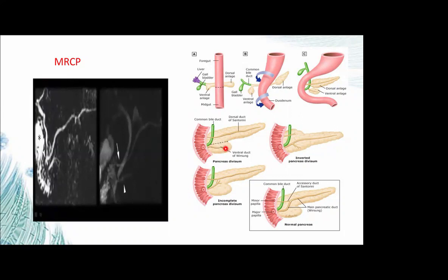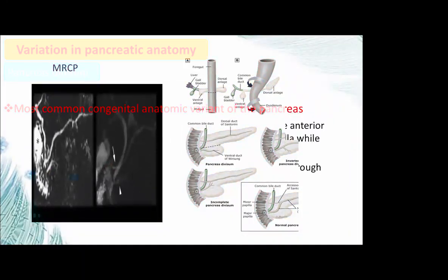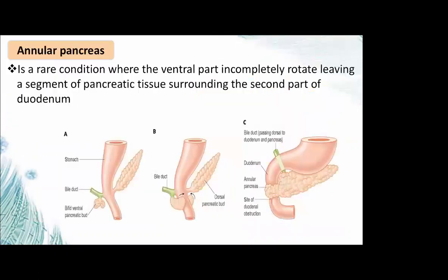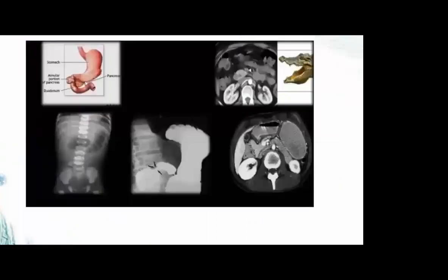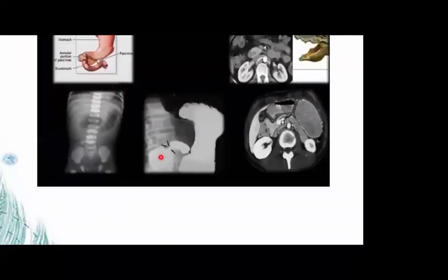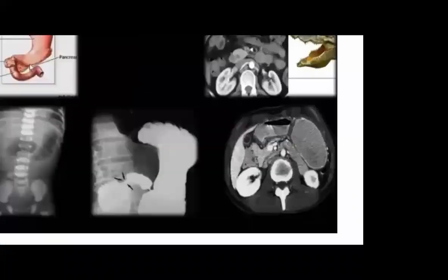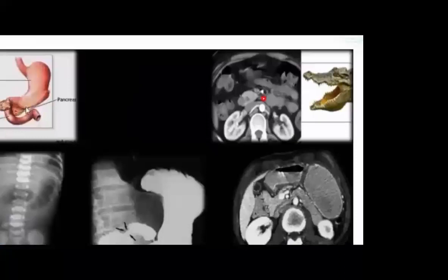The anterior inferior part of the head then drains into the major papilla. This is known as pancreas divisum. On MRCP, a cross-sign is seen. With pancreas divisum, the dorsal duct crosses anterior to become the minor papilla duct. There are also conditions where the ventral pancreatic bud can completely encircle the second part of the duodenum — annular pancreas. On plain X-ray, it shows a double-bubble sign. On barium study, it constricts the second part of the duodenum. On CT, it shows a ring of pancreatic tissue.